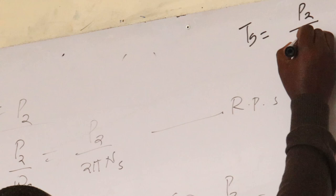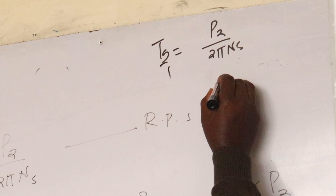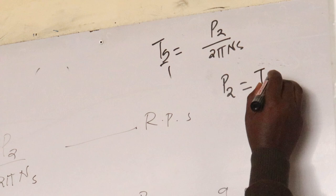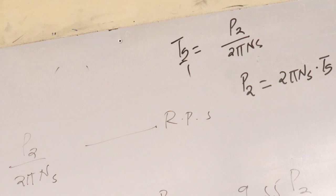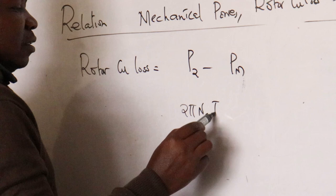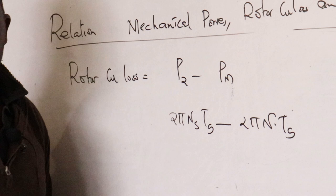So we can say rotor copper loss equals P2 minus Pm, which is 2 pi Ns Tg minus 2 pi N Tg, equal to rotor copper loss. Now I want to relate this by dividing each equation by P2 — the input — to compare the rotor copper loss to its input.